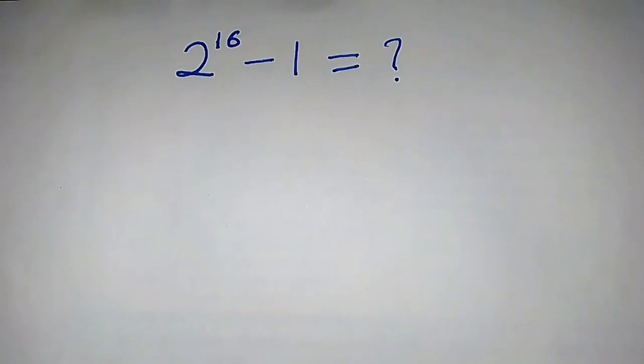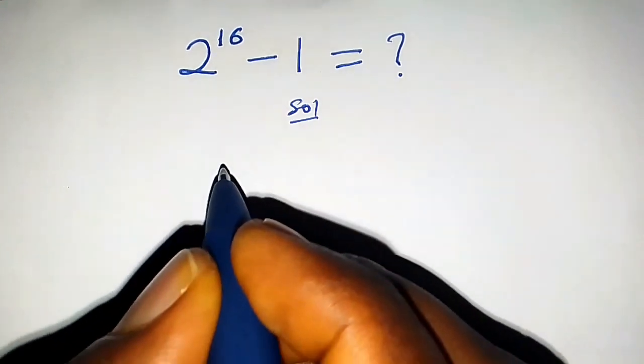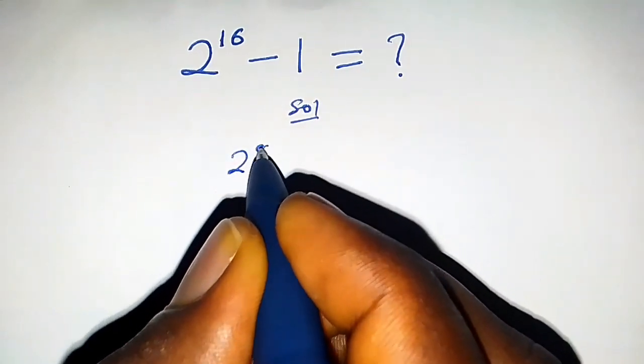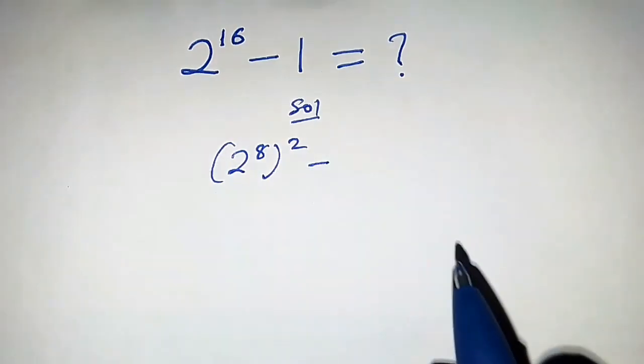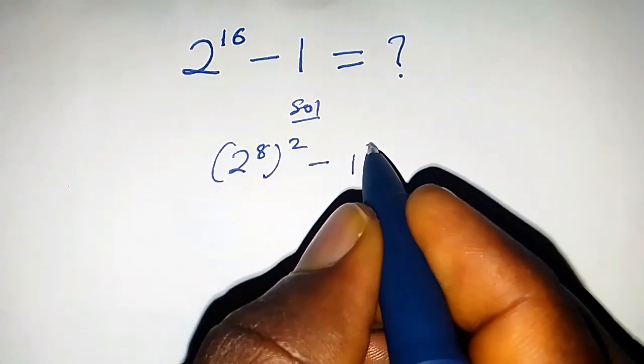How do we solve this beautiful math problem without using a calculator? 2 raised to the power 16 can also be written as 2 raised to the power 8 times 2, minus 1, which is the same thing as 1 squared.